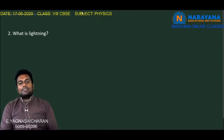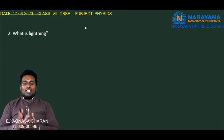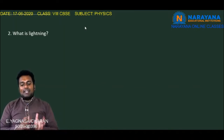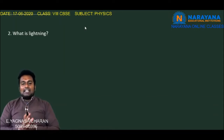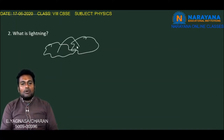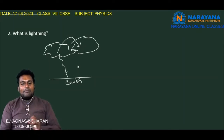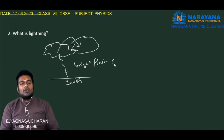Let us see the second question: What is lightning? Lightning is the occurrence of a natural electric discharge of very short duration and high voltage between a cloud and the ground, or within a cloud, accompanied by a bright flash and typically also thunder. It occurs between cloud and cloud, or between cloud and earth, momentarily, giving a very bright flash and sound.